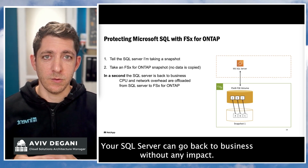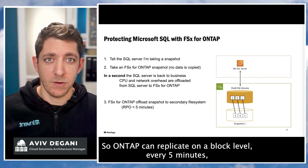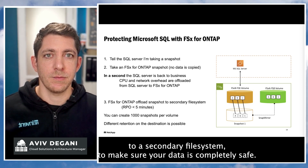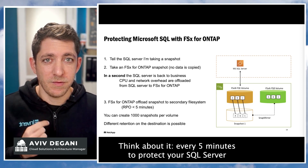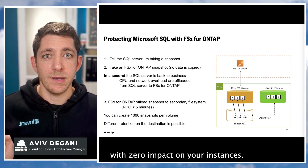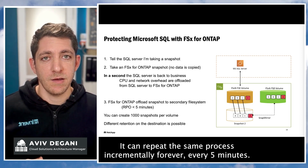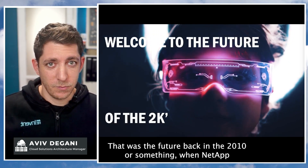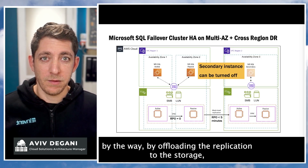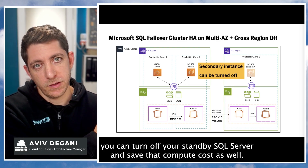It's like creating a time machine for your data. It takes just a second to take a backup, and your SQL server can go back to business without any impact in a second. That's a local copy, so ONTAP can replicate on a block level every five minutes to a secondary file system to make sure your data is completely safe — every five minutes to protect your SQL server with zero impact on your instances. By offloading the replication to the storage, you can also turn off your standby SQL server and save that compute cost as well.